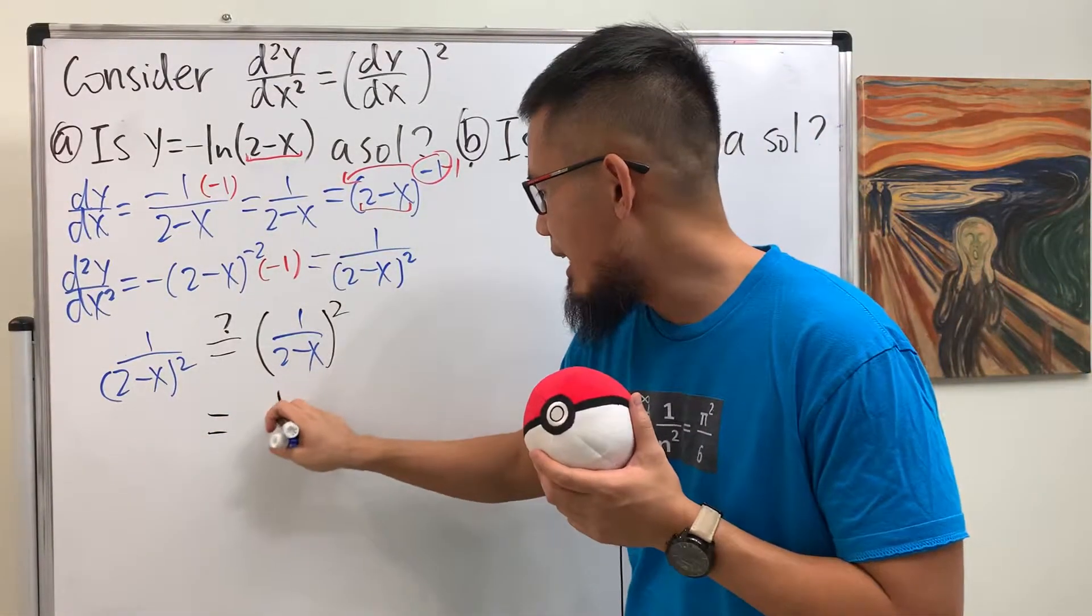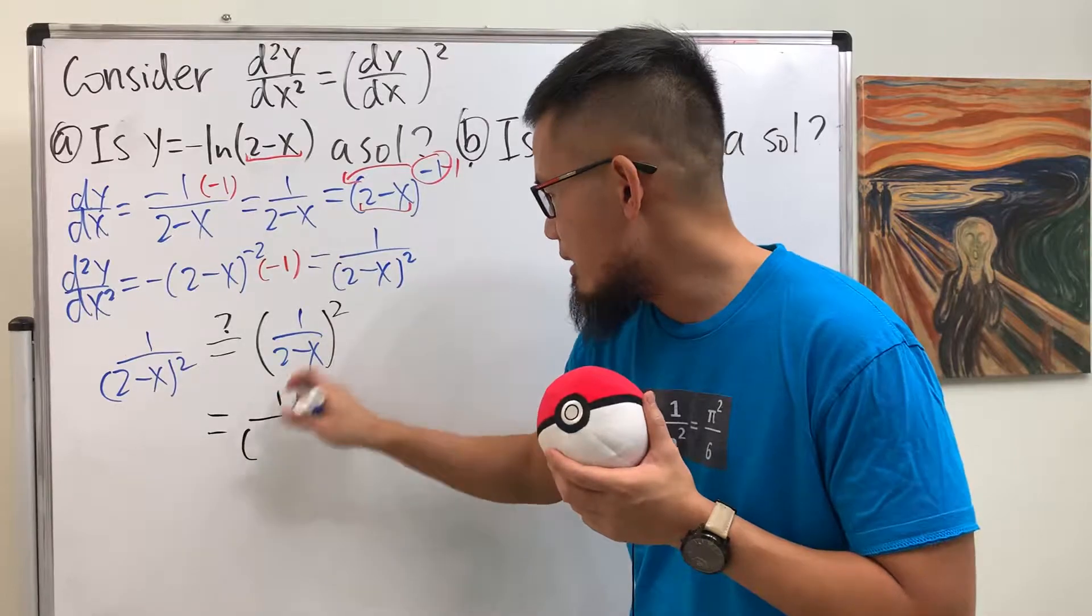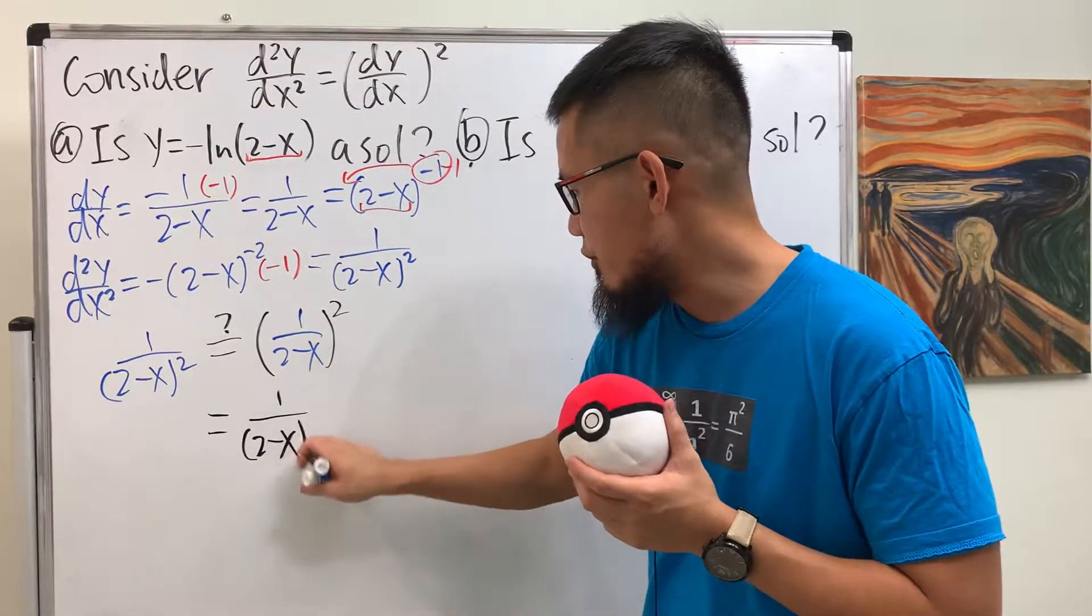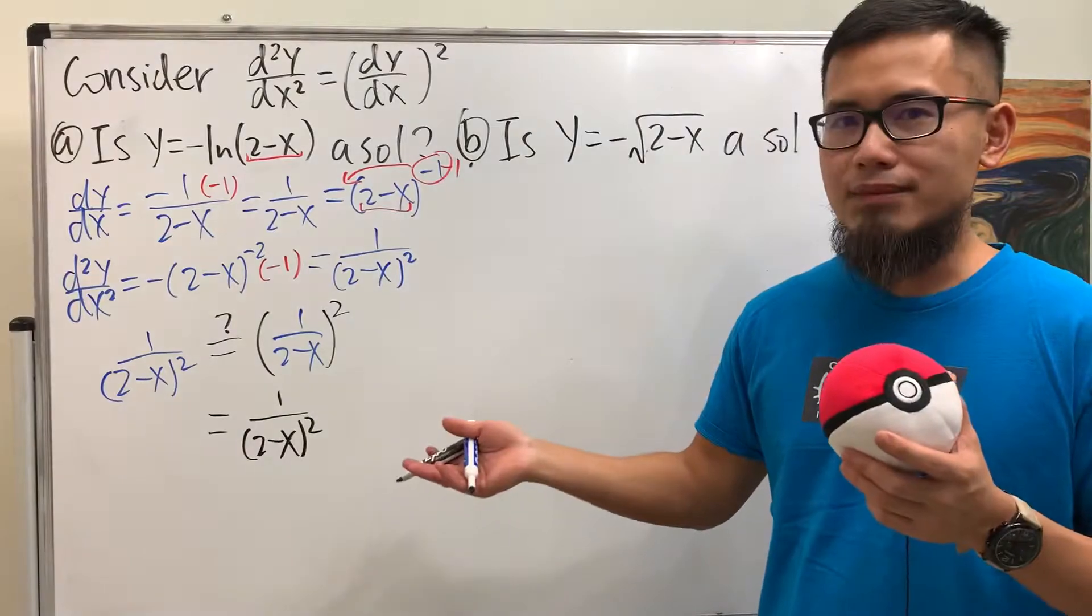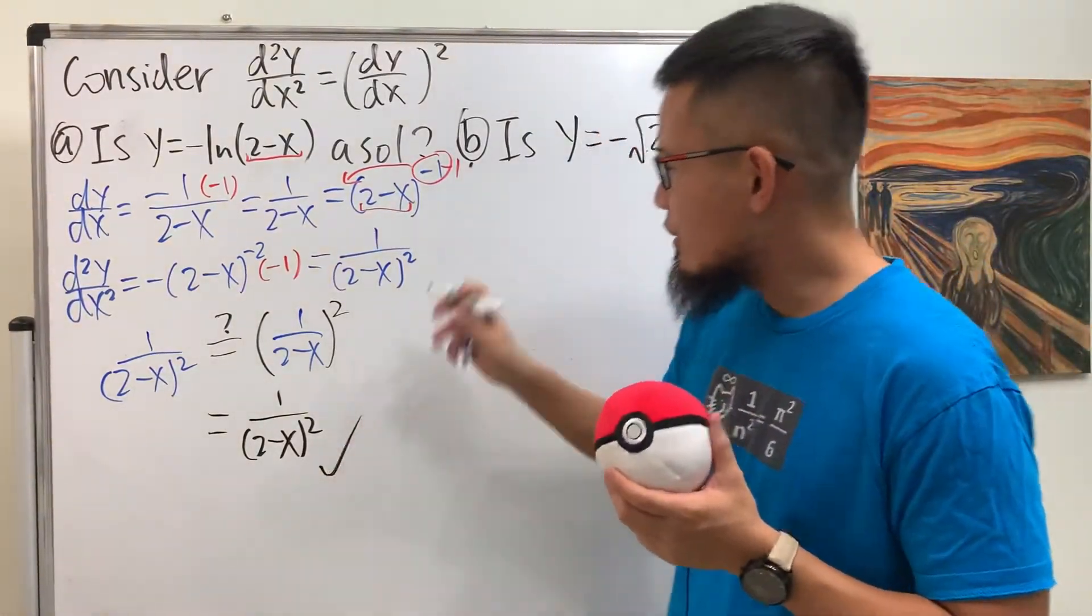You see that 1 squared is 1, and then we have the inside here. We still have the (2-x) put inside of the parentheses, and just square that. Of course, they are equal to each other. So for this one, it checks.